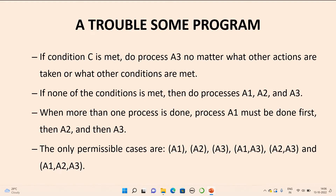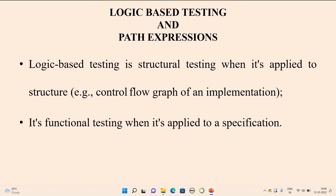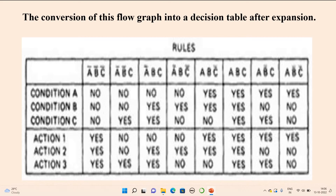The conversion of this program into the decision table is given as below. Looking at condition A — when A-bar is present that means no, and when there is no bar for A, that means yes and it will be executed. Similarly for condition B — when B-bar is there, that is no; when B-bar is not there, that is yes. And for condition C — whenever there is no bar for C, that is no; whenever C is present without a bar, that is yes.